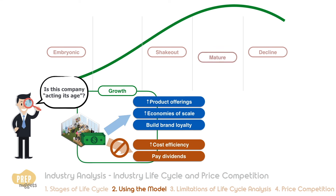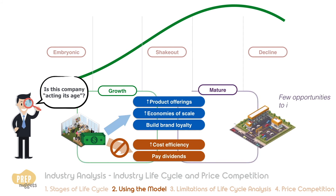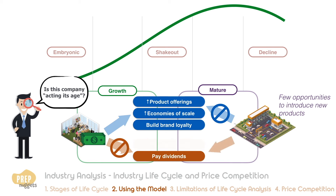On the other hand, a company in a mature industry may find few opportunities to introduce new products, so not much of its free cash flows should go to operations that generate growth. Rather, the company should focus more on cost efficiency, and the majority of its free cash flow should be paid out to investors through dividends or stock repurchases.